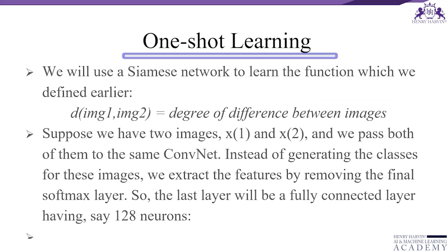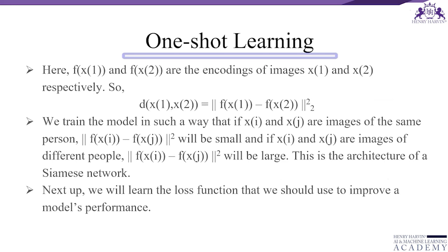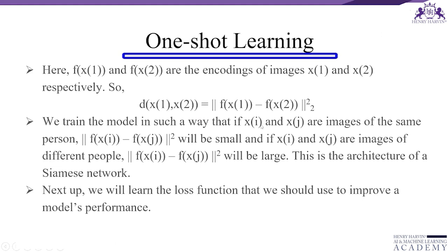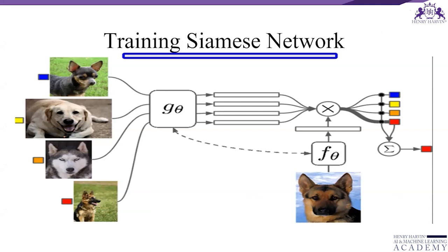When we have two images X1 and X2, we pass both of them to the same convolutional network. Instead of generating classes for these images, we extract the features by removing the final softmax layer, so the last layer is a fully connected layer with say 128 neurons. F of X1 and F of X2 are the encodings of images X1 and X2 respectively. We can find the difference as F of X1 minus F of X2. We train the model such that if XI and XJ are images of the same person, this difference will be small; if they are images of different people, this difference will be large.